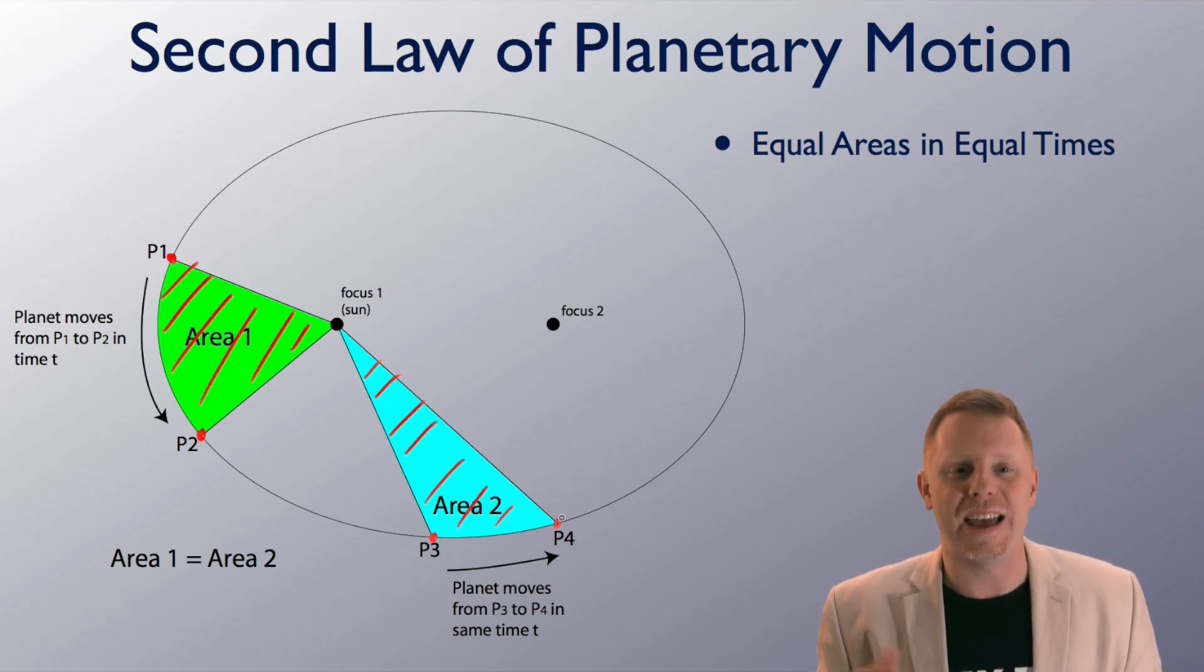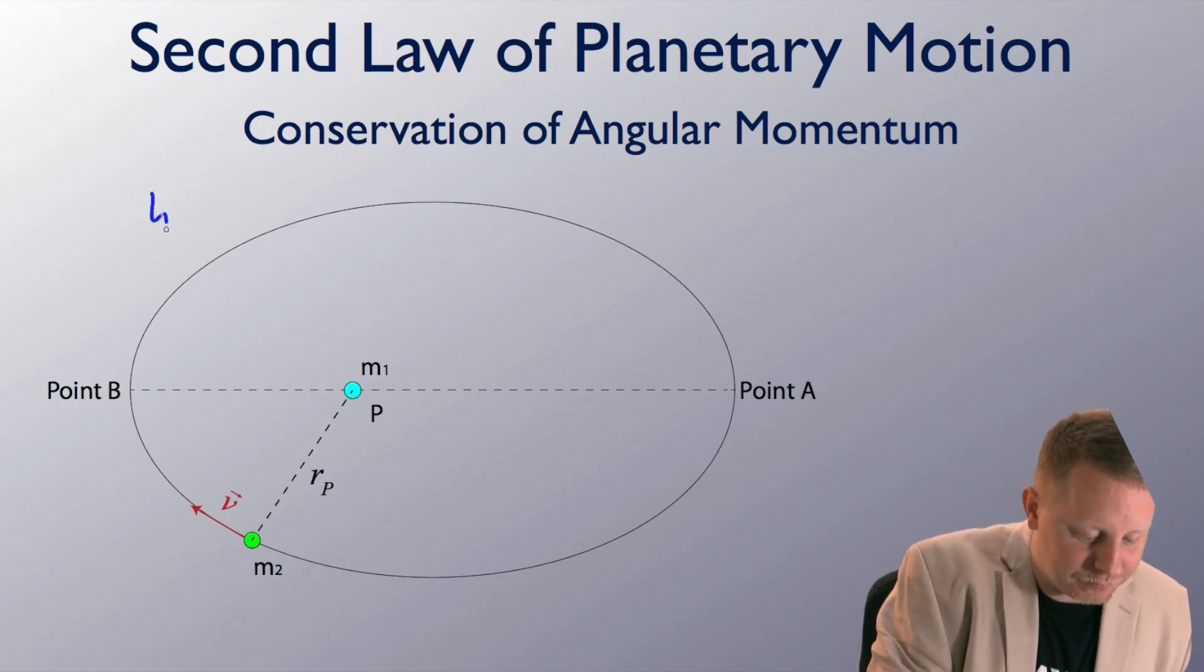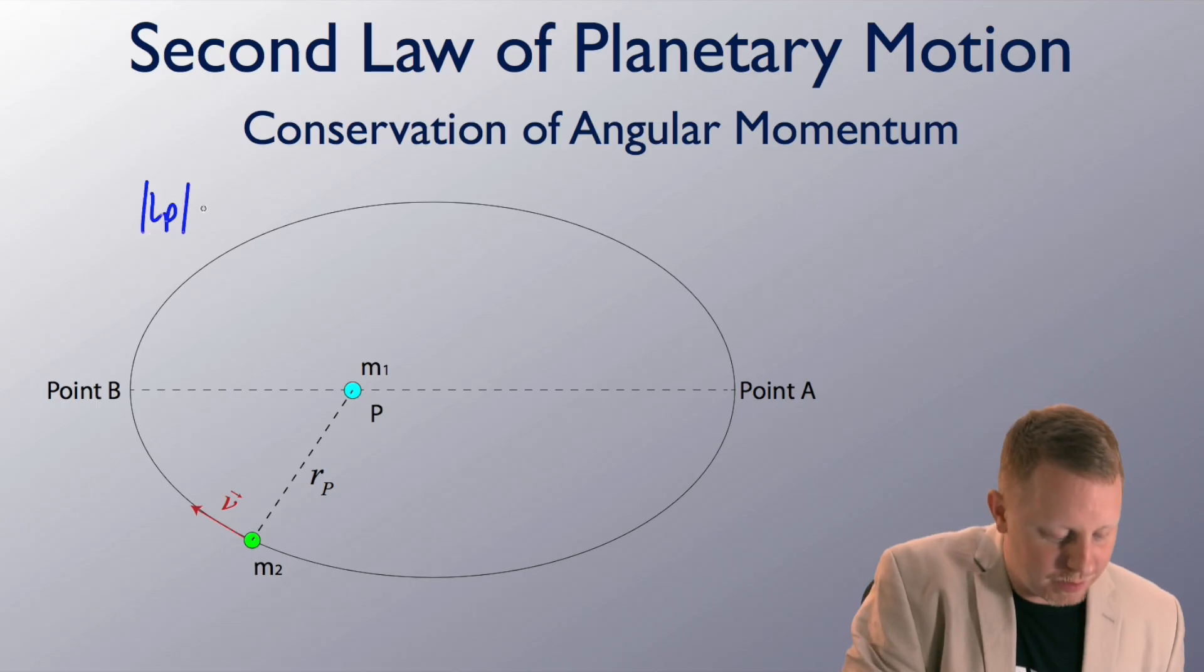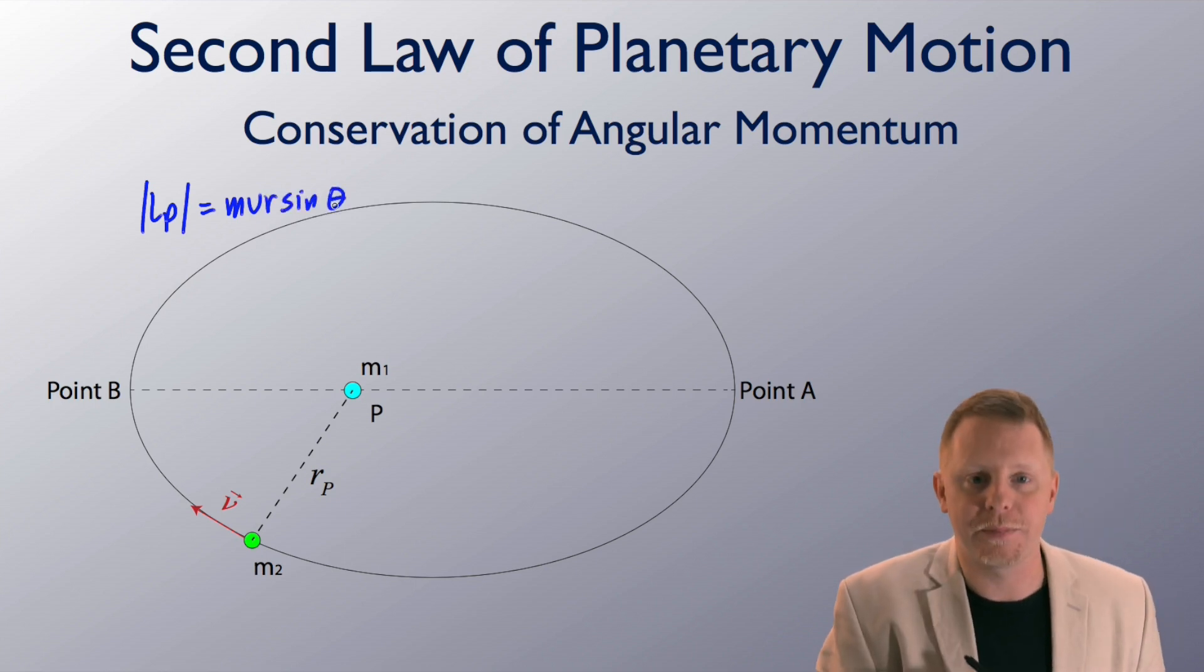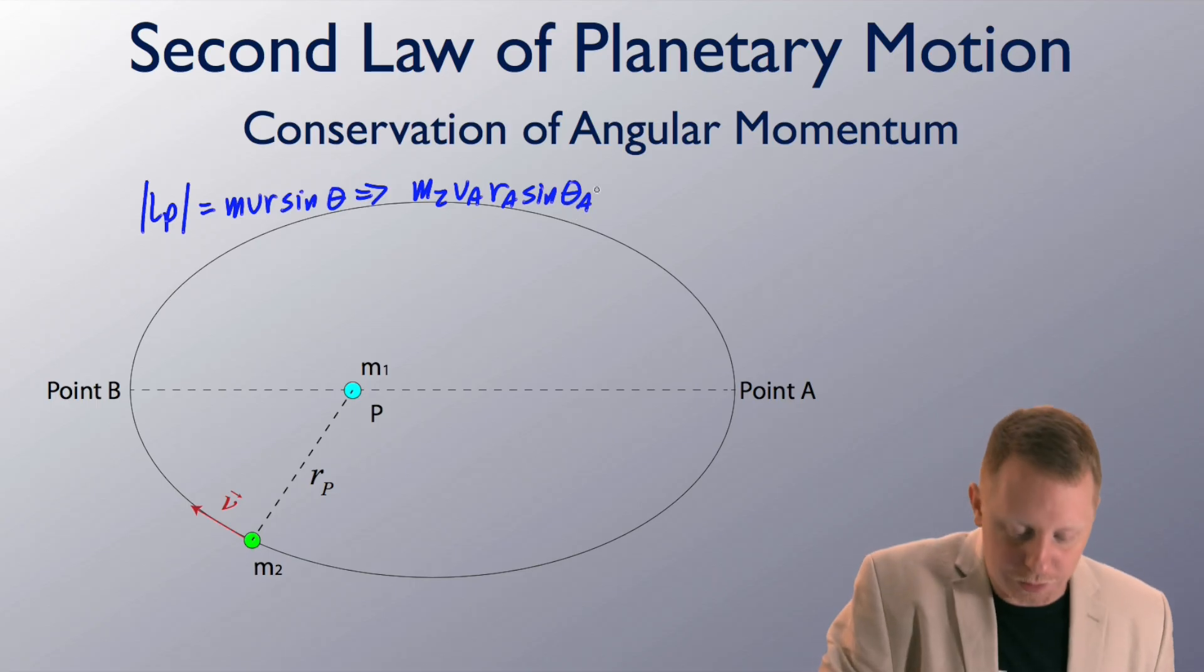Alright, that leads us to a nice application. The second law of planetary motion is really all about conservation of angular momentum. If we analyze this from the reference point p over here, and recognize there are no external forces or torques, then angular momentum of the system must be maintained. It must be conserved. So, we could draw this as the magnitude of the angular momentum about point p is equal to mvr times the sine of angle theta. And in our case, as we're looking over here at mass 2, this implies that mass 2, and let's look at it over here when it's at point a, its velocity at a, its radius at a, times the sine of theta at a, must be equal to its mass, and let's compare it to point b. Its velocity at b, its radius at b, times the sine of theta b.